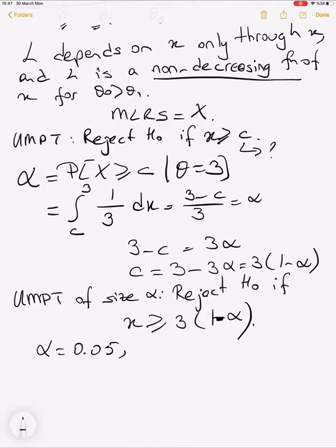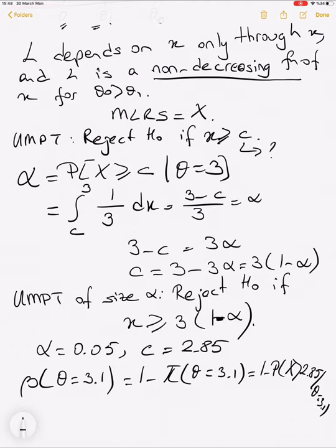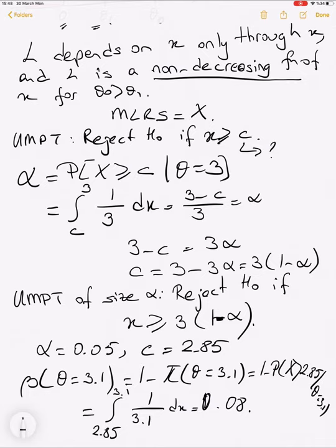For type II error when θ = 3.1: β = 1 - π(3.1) = 1 - P(X ≥ 2.85 | θ = 3.1) = ∫[2.85 to 3.1] (1/3.1)dx ≈ 0.08. So the probability of type II error in this case is approximately 0.08.